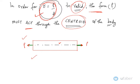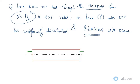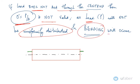But what happens if it does not act through the centroid? Then this equation is not valid, as load which acts will not be uniformly distributed. When it is not uniformly distributed, some bending will occur.